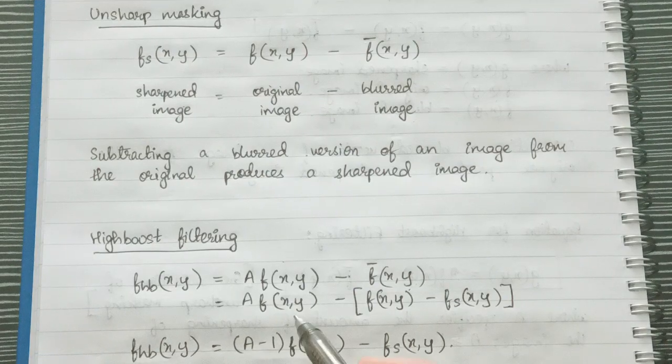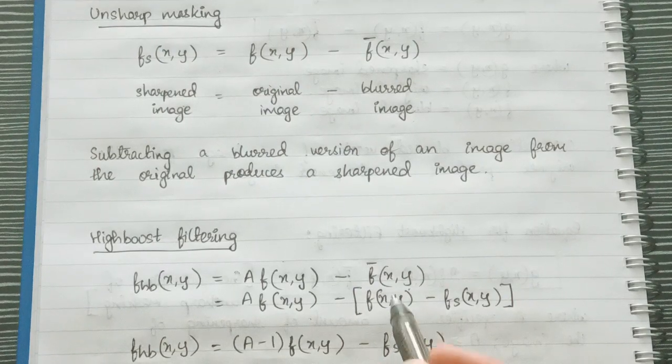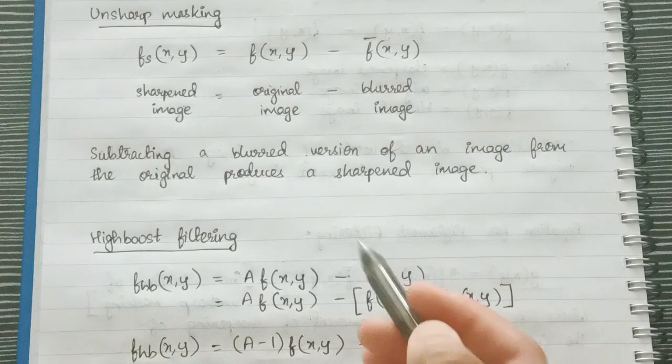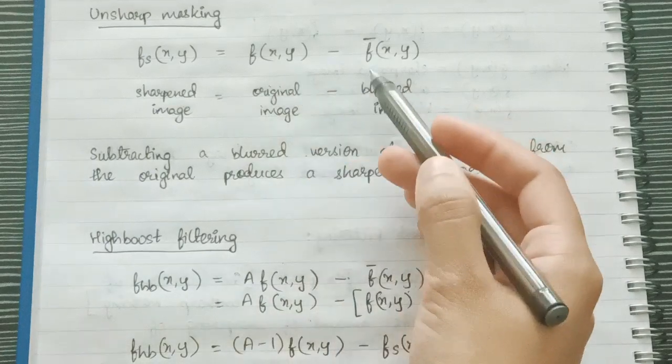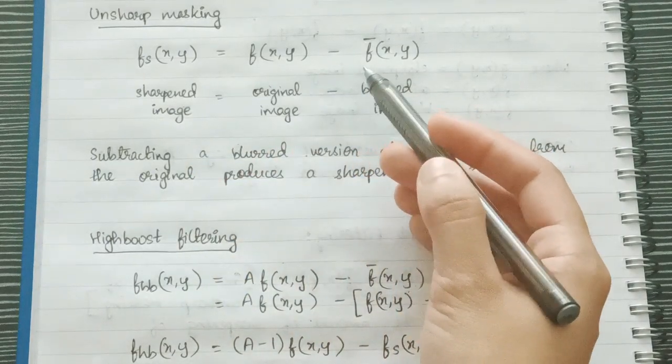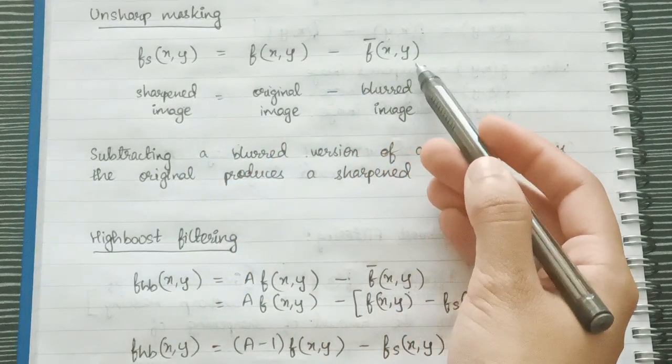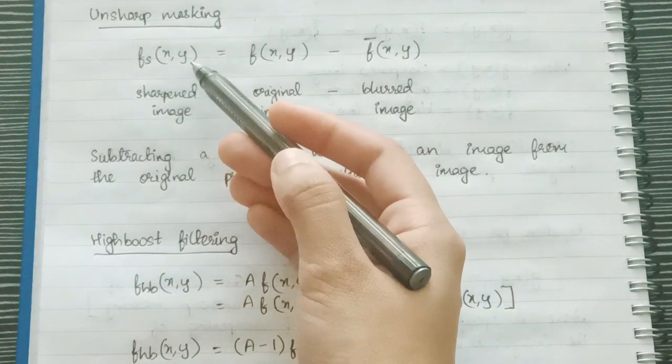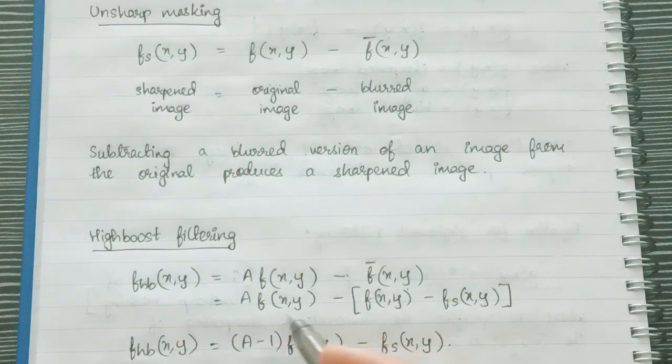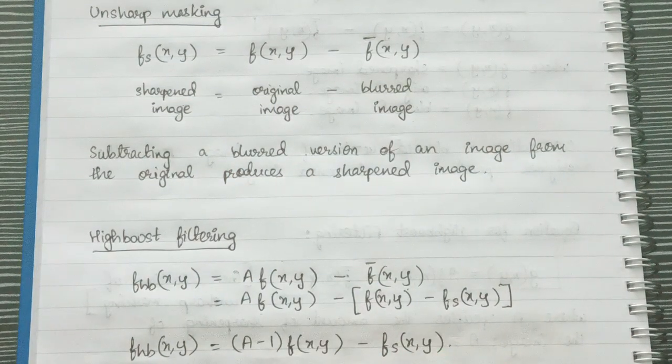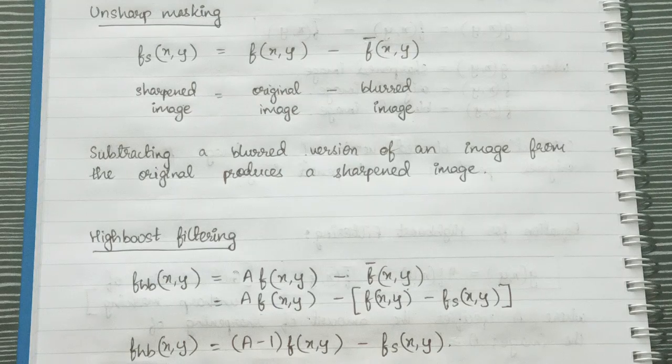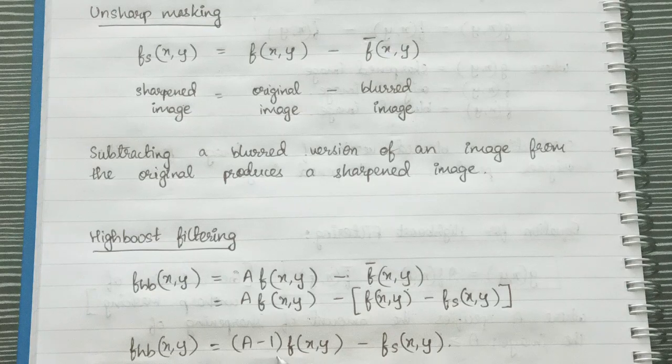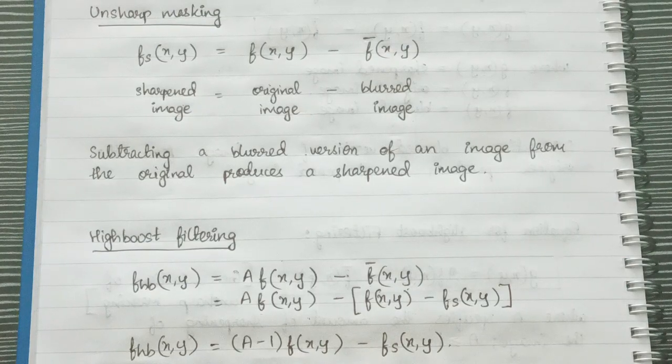Now what are we doing in the next step? This f'(x,y) we are substituting its value from our previous equation. So if this is our equation then f'(x,y) = f(x,y) - fs(x,y). So that we are substituting in this step. So eventually we get fhb which is for high boost. fhb(x,y) = (A-1)*f(x,y) - fs(x,y).